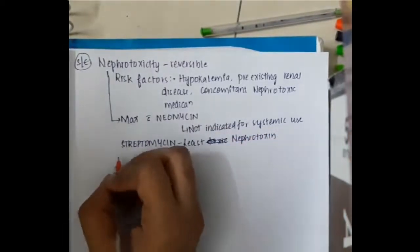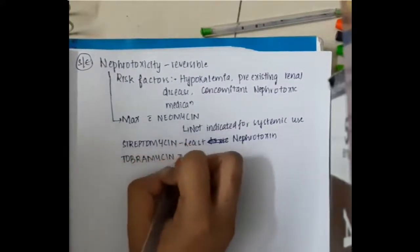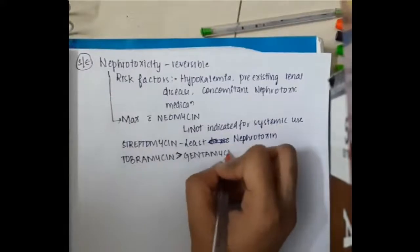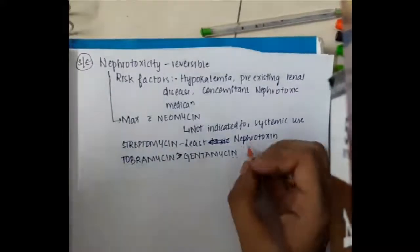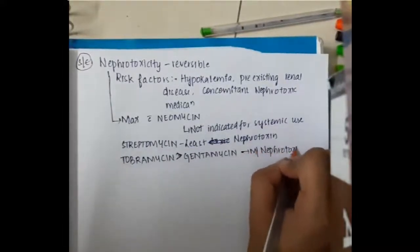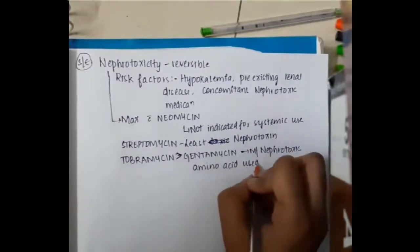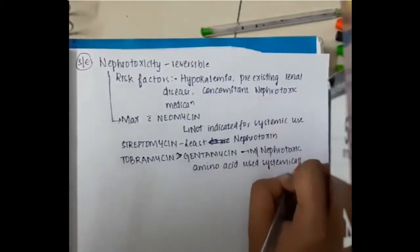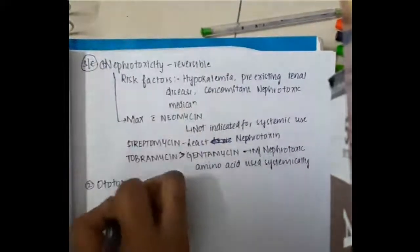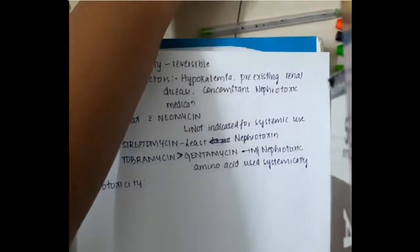Streptomycin is the least nephrotoxic aminoglycoside. Among drugs used systemically, tobramycin followed by gentamicin is the most nephrotoxic.